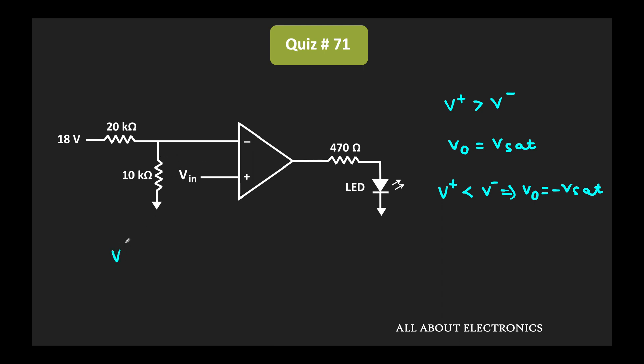Here, V plus is equal to Vin, while V minus is equal to 10 kilohm divided by 10 kilohm plus 20 kilohm times 18 volt, which equals 6 volt. That means V minus equals 6 volt.